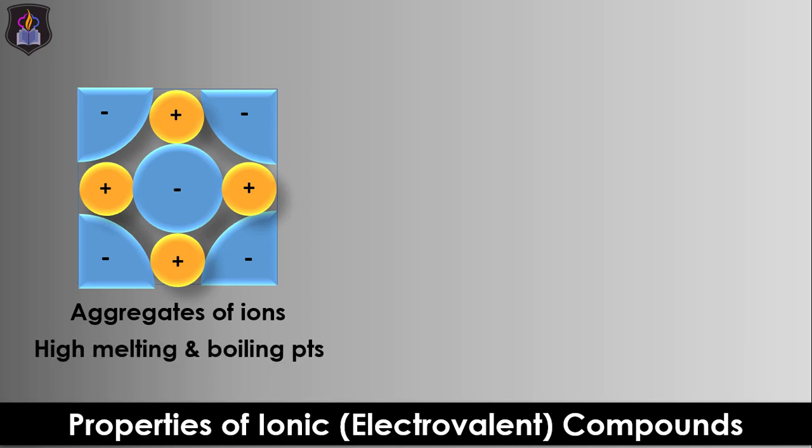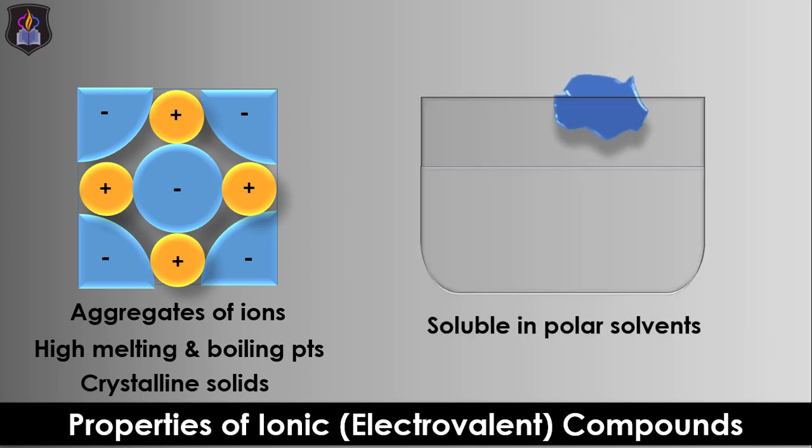Also, the ions are closely packed in a regular cubic lattice with a positive ion surrounded by 6 negative ions and a negative ion surrounded by 6 positive ions. Therefore, ionic compounds are crystalline solids at room temperature. They dissolve in polar solvents like water due to the interactions between the oppositely charged ions and the polar ends of water.